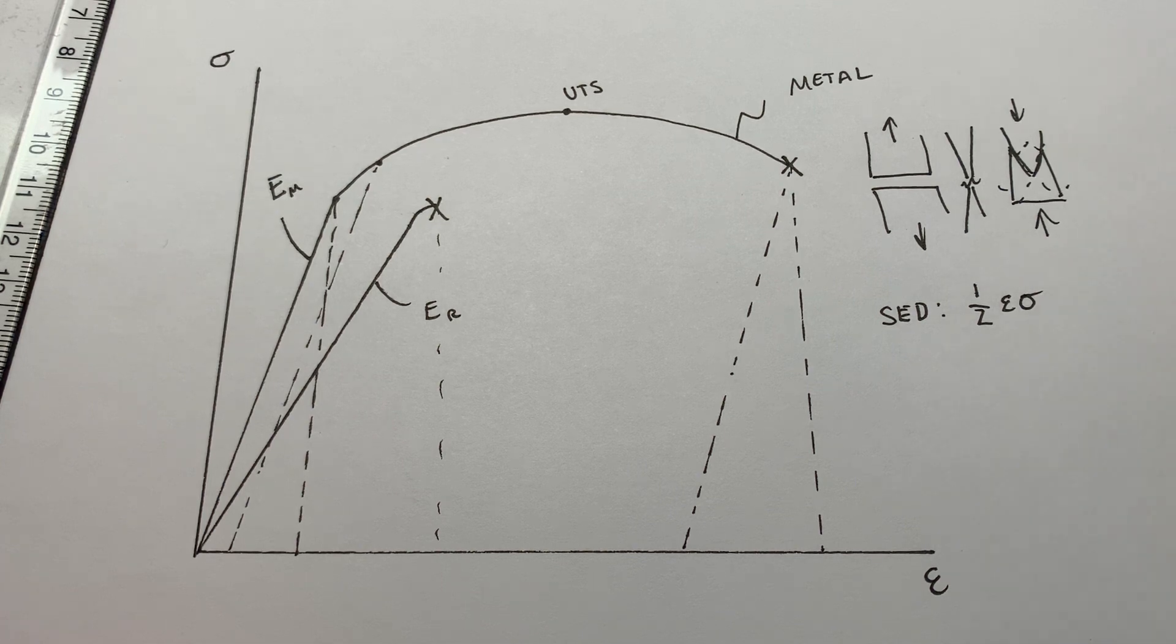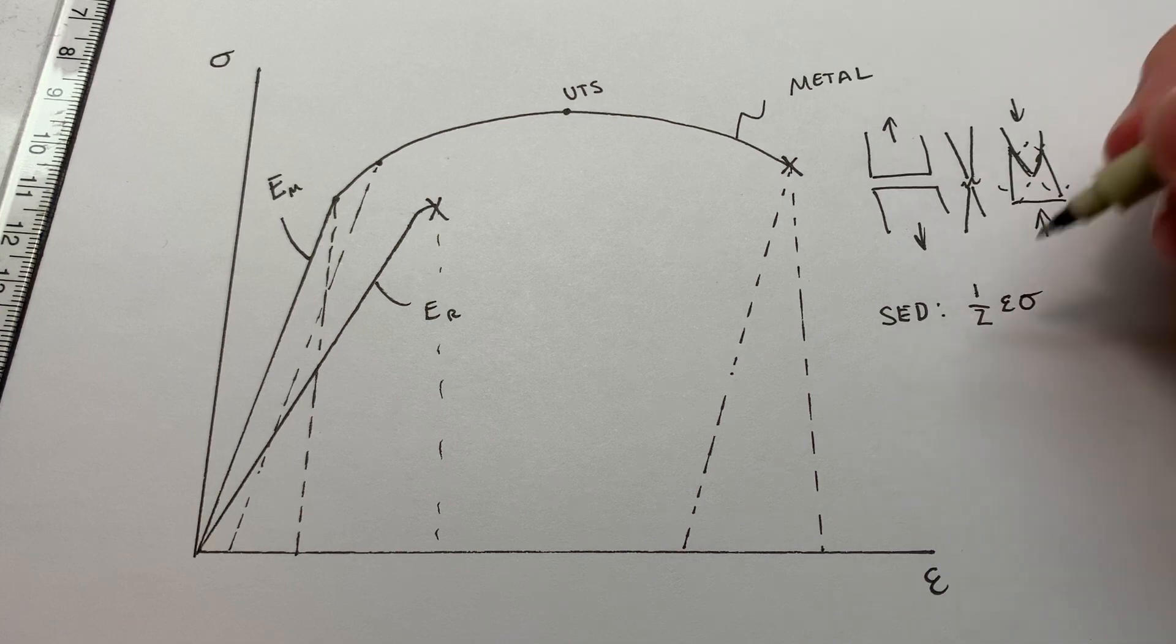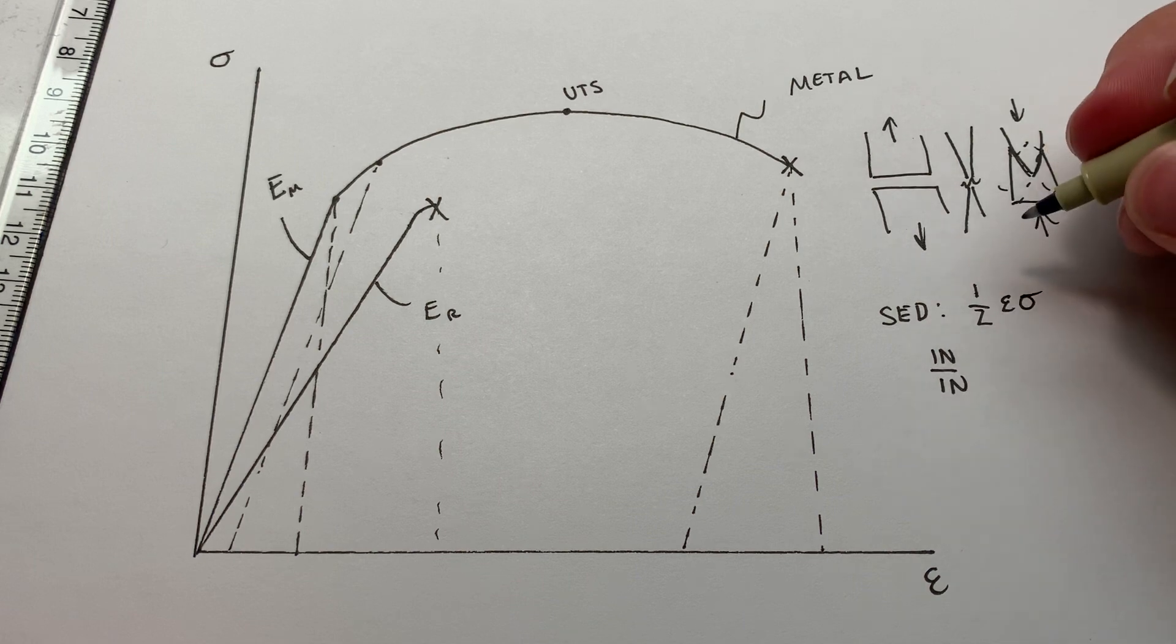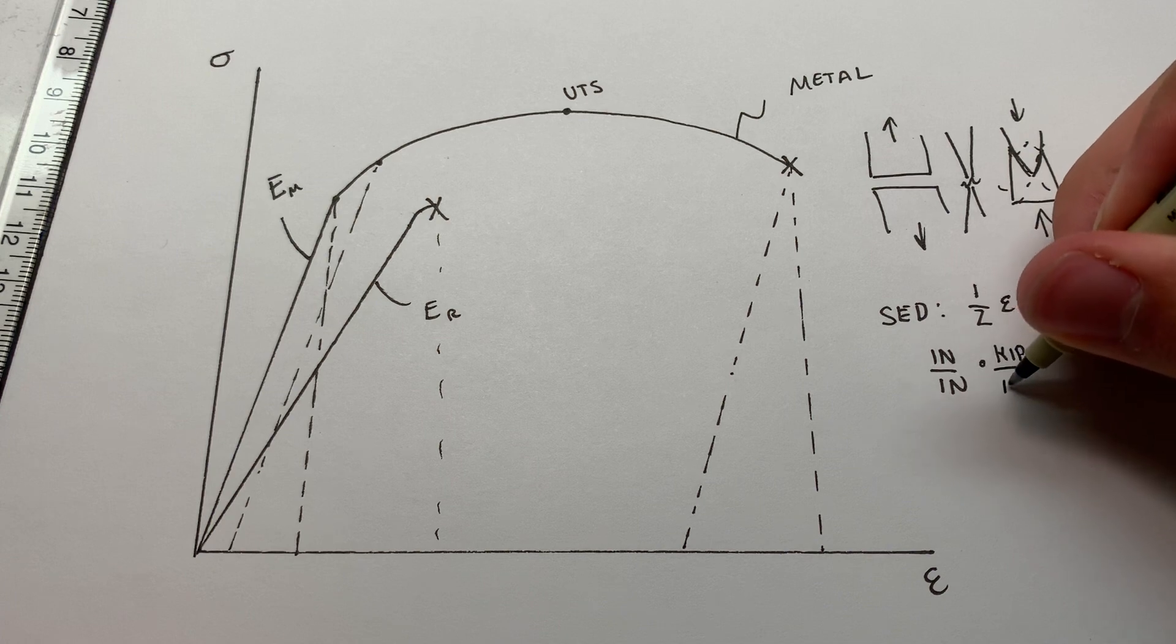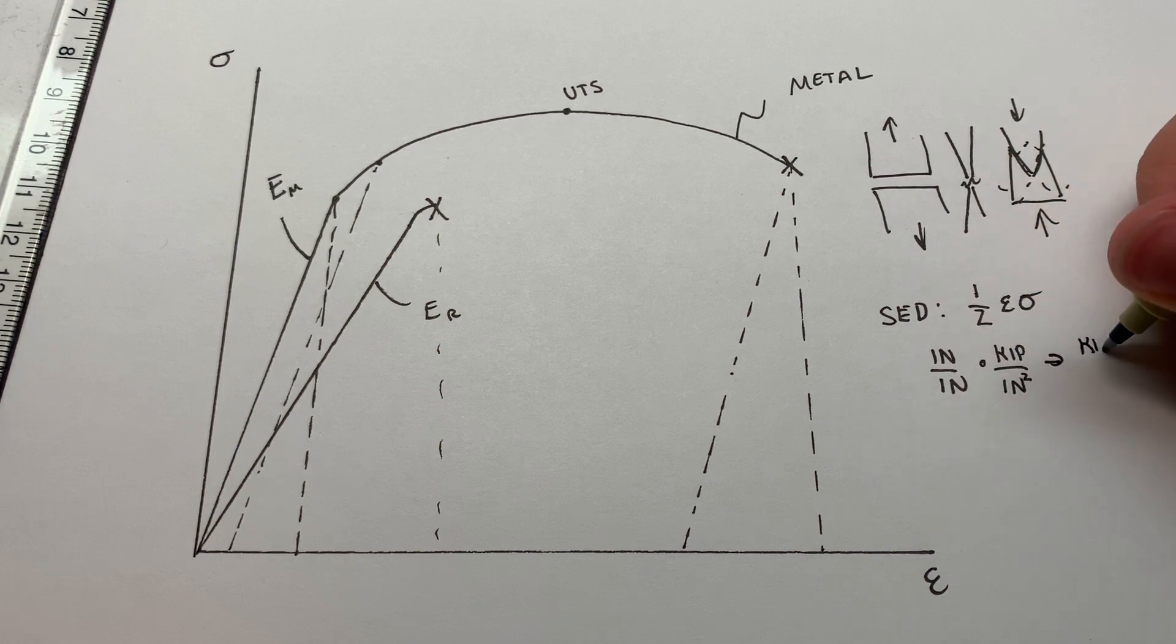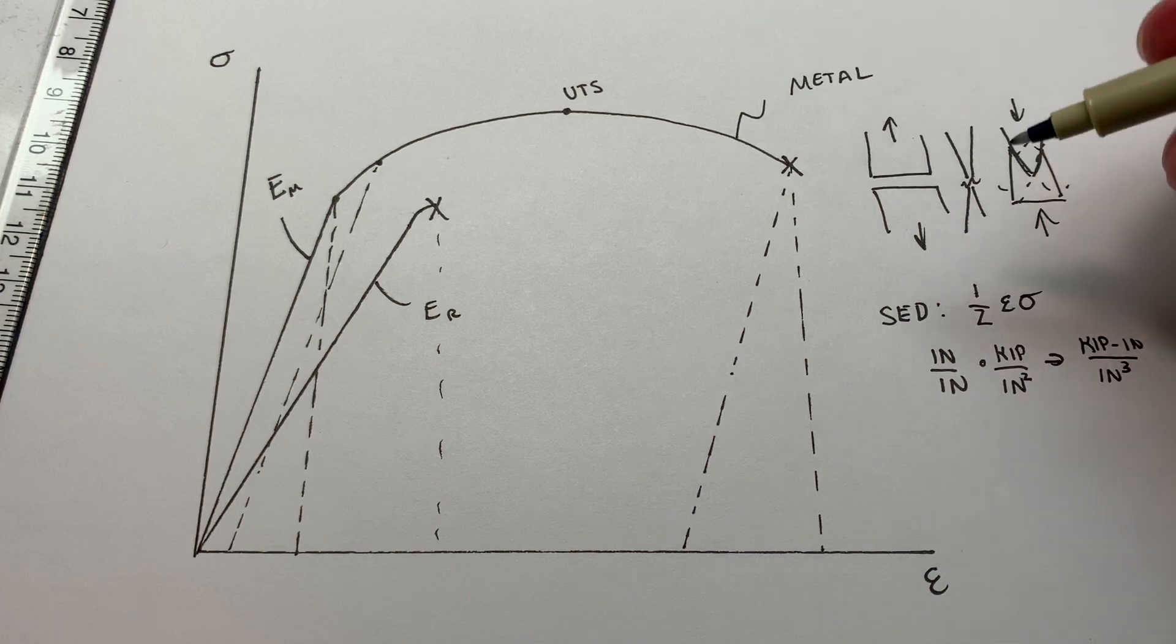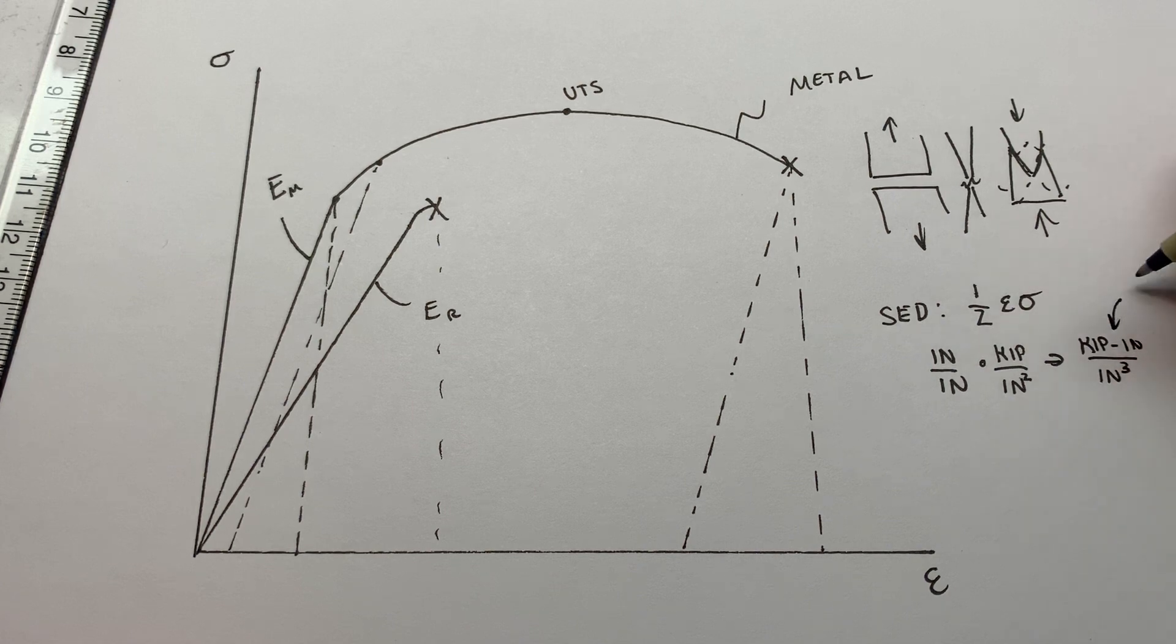And that seems a little weird, like stress times strain gives you strain energy density. Well, think of it this way. You have one half, that's just a number. We don't need to think about that. And then the units of the strain, that's going to be an inch per inch. And then the units of the stress, that's going to be, let's say a kip per square inch, kip per inches squared. That's going to lead to kip inches per inches cubed. Because a lot of people say, well, strain is unitless. So the units are still kips per square inch. But no, no, no. Think of it this way. And all of a sudden you say, okay, that's a unit of energy.